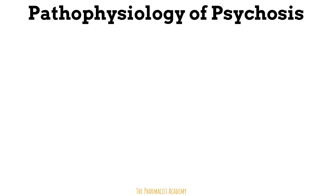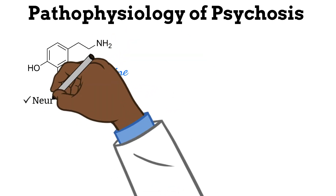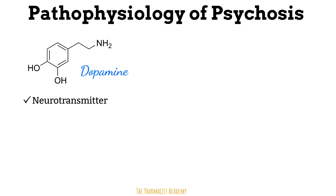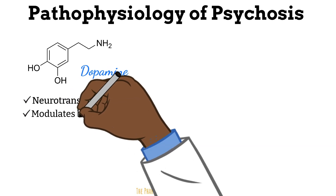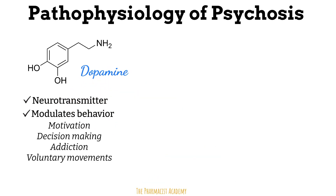There are many different hypotheses and proposed mechanisms as to why psychosis occurs, but the most common is related to dopamine. Dopamine is a neurotransmitter — a chemical messenger in the brain responsible for carrying messages from one area to the next. It regulates behaviors such as motivation, decision-making, addiction, and voluntary movements. Low dopamine levels can make it difficult to leave bed or eat, leading to tiredness and lethargy, while higher dopamine levels are associated with focusing on benefits and task persistence. Certain drugs produce large surges of dopamine, reinforcing connections that can lead to uncontrollable cravings and possible addiction.